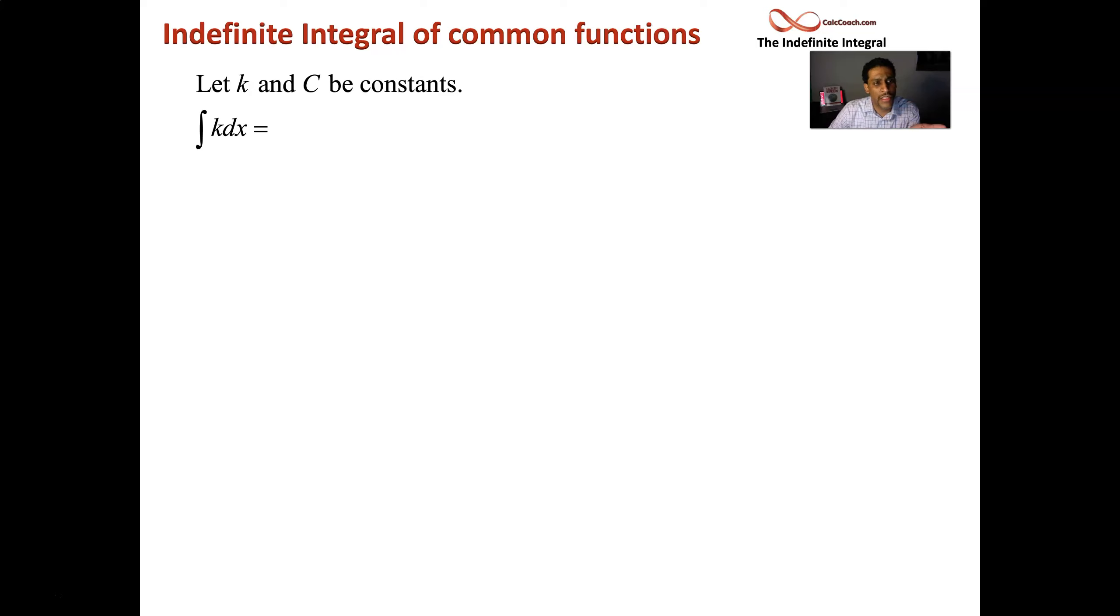Who is this k? k is a constant. Who is k the derivative of? k is the derivative of kx plus C. Who is x to the n the derivative of? x to the n is the derivative of x to the n+1 over n+1 plus C. I like to call that the reverse power rule.